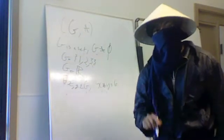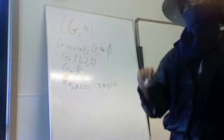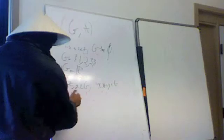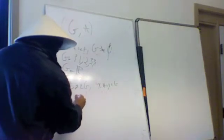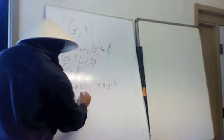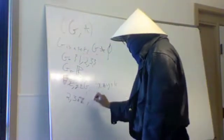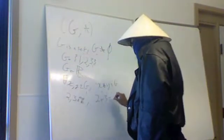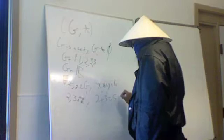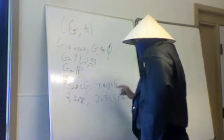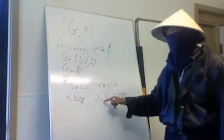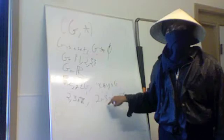An example of a binary operator would be addition under the integers. So 2, 3 is in G. 2 plus 3 equals 5, which is in G. Plus is our binary operator, and we are in the integers.